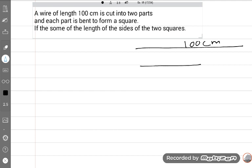So what is the length? If this is x, then the other piece is 100 minus x. So if one is x, then it is 100 minus x. We will make these two lines bent in form of a square.